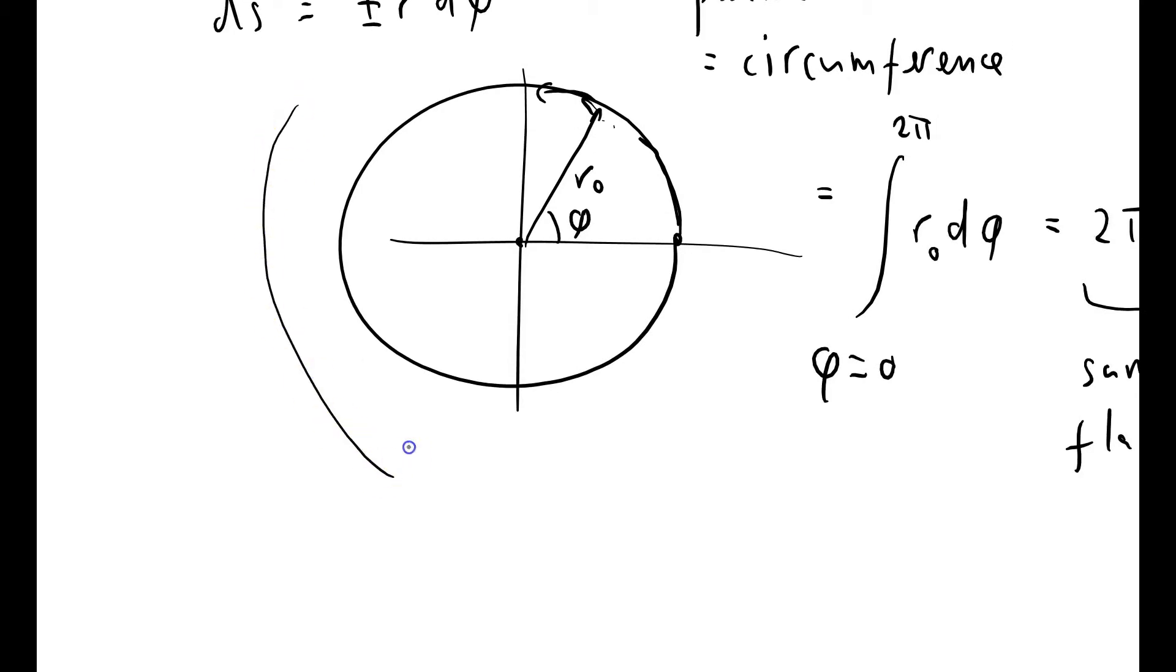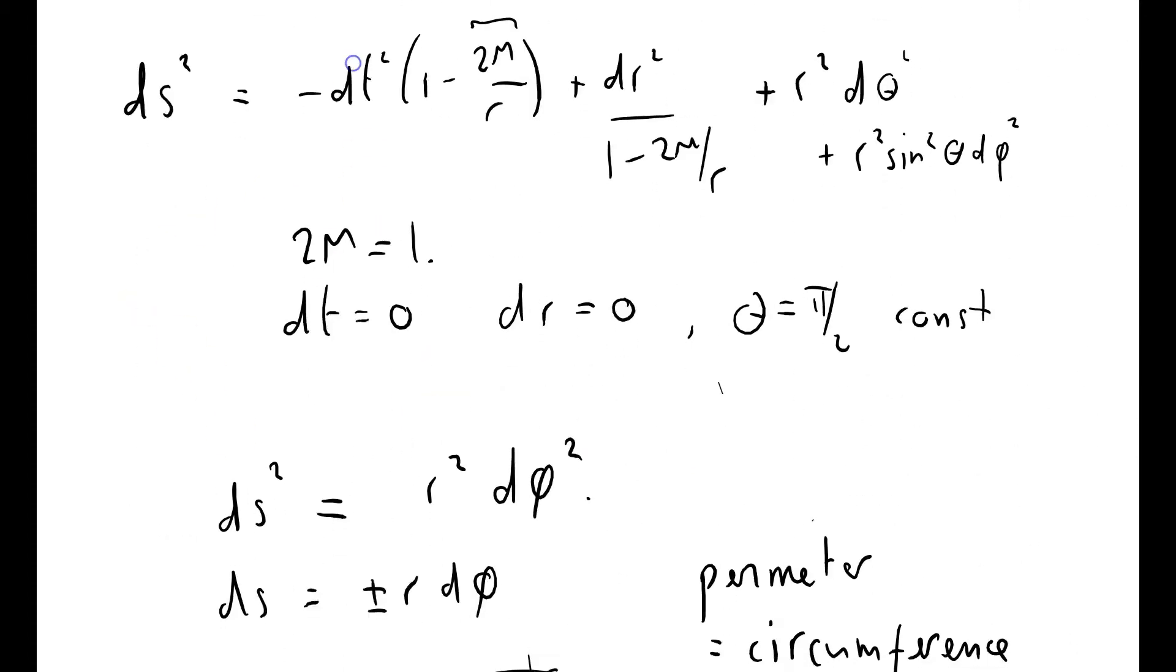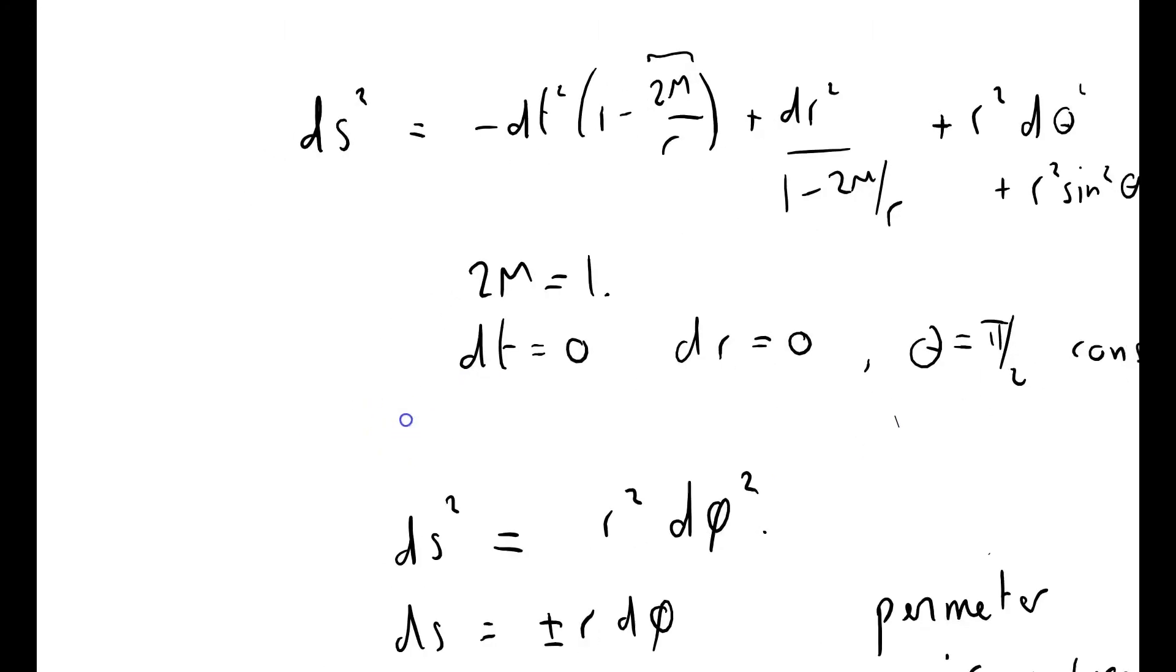Let's just consider a slightly larger circle of radius r1, and of course the circumference there is going to be 2 pi r1. And now what I want to do is to consider how far it is to go from there to there. How far do I have to climb up from this radius r0 to this radius r1? Well of course in flat space it's just r1 minus r0, but in Schwarzschild space it's a little bit different.